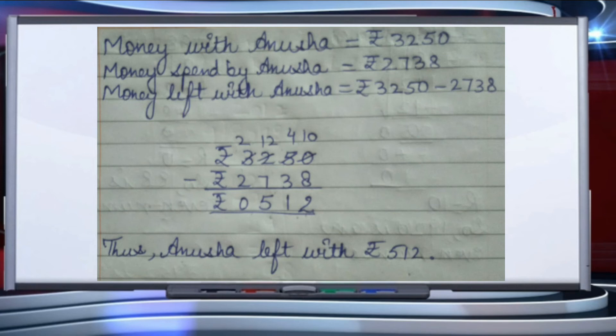When we subtract: 0 minus 8 is not possible, so it becomes 10 minus 8 equals 2. In place of 5 it becomes 4; 4 minus 3 equals 1. Then 2 minus 7 is not possible, so borrow to get 12 minus 7 equals 5, and 2 minus 2 equals 0. Anusha is left with rupees 512.